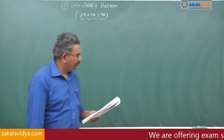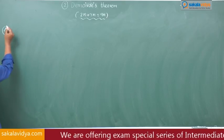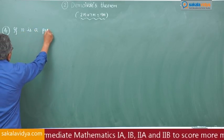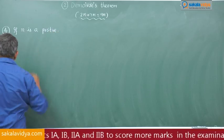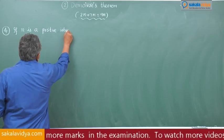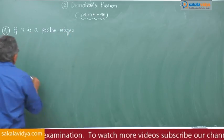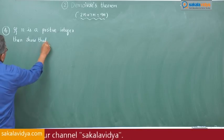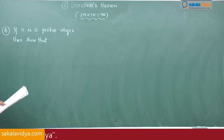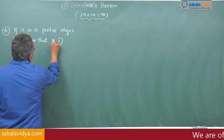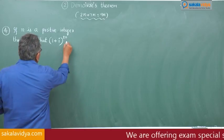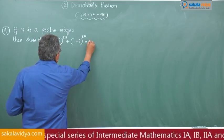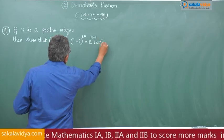Fourth problem: If n is a positive integer, then prove that (1 + i) to the power of 2n plus (1 − i) to the power of 2n is equal to 2 to the power of n+1 times cos(nπ/2).